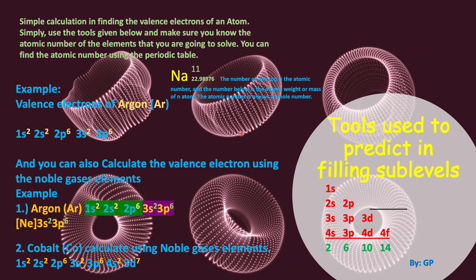This is a simple calculation for finding the valence electrons of an atom. Use the tools given and make sure you know the atomic number of the elements you are going to solve. You can find the atomic number using the periodic table. For example, sodium has atomic number 11 and atomic weight 22.98976. Atomic number is always a whole number, while atomic mass is the bigger number and may have decimal places.